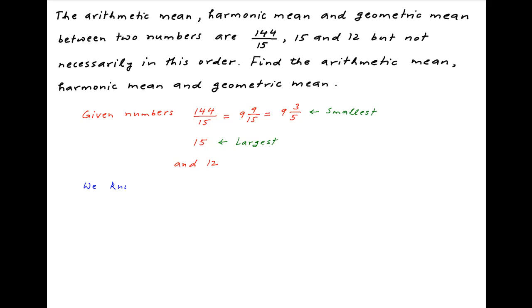Now recall the property that the harmonic mean of two numbers is less than or equal to their geometric mean, which in turn is less than or equal to their arithmetic mean.